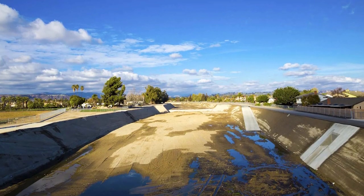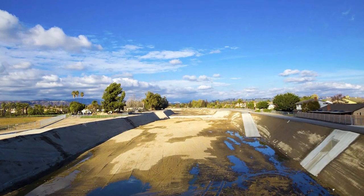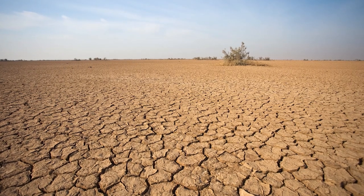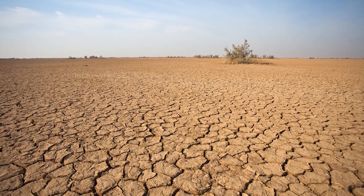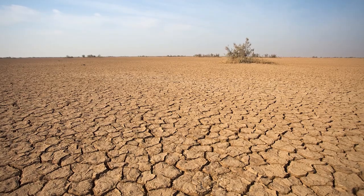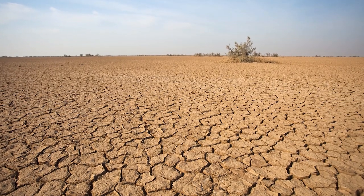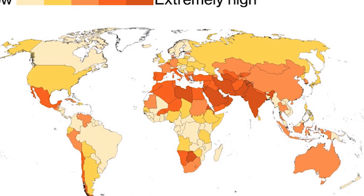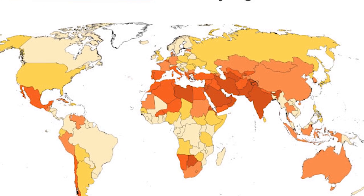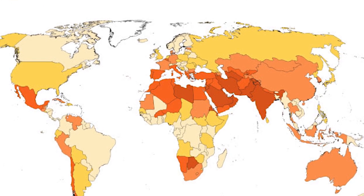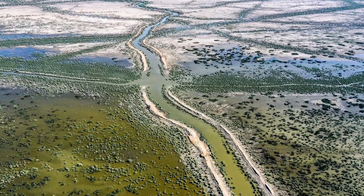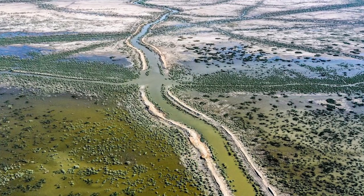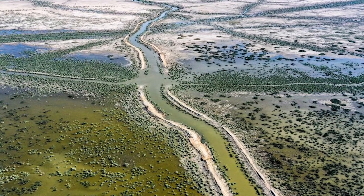Problem 5: Shortage of Fresh Water. Another major problem facing Earth in 2050 is the shortage of fresh water. With increasing demand for water, many regions around the world will experience water scarcity, leading to increased competition for water resources and potentially even water wars.